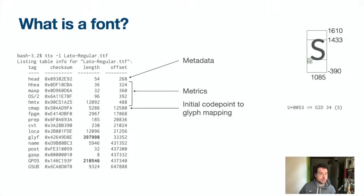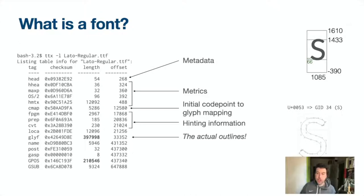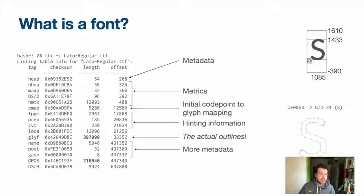Then we have some information about hinting, which I'm not going to go into today. And then finally, we come to the actual outlines — the shapes of the letters themselves. Then there's a bit more metadata. The name table has got copyright information, the name of the font and things like that — text strings. And then down at the bottom we've got these two tables: gpos and gsub.